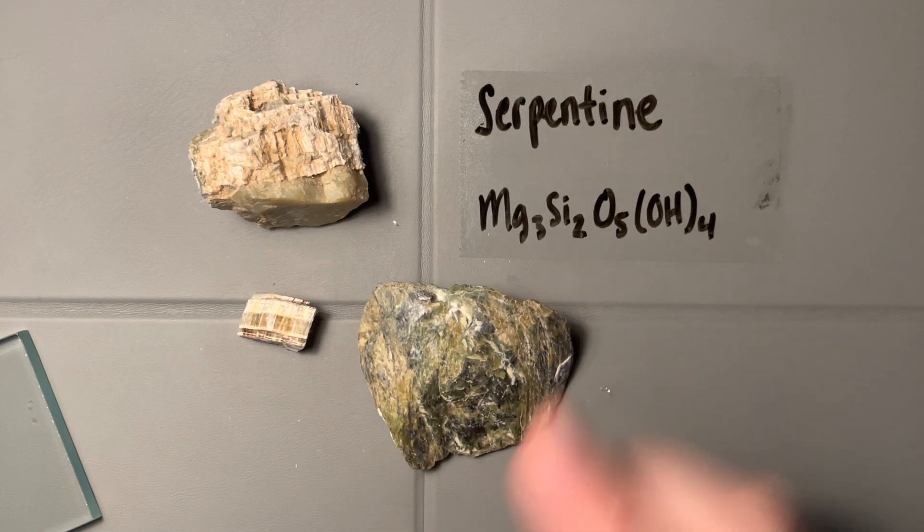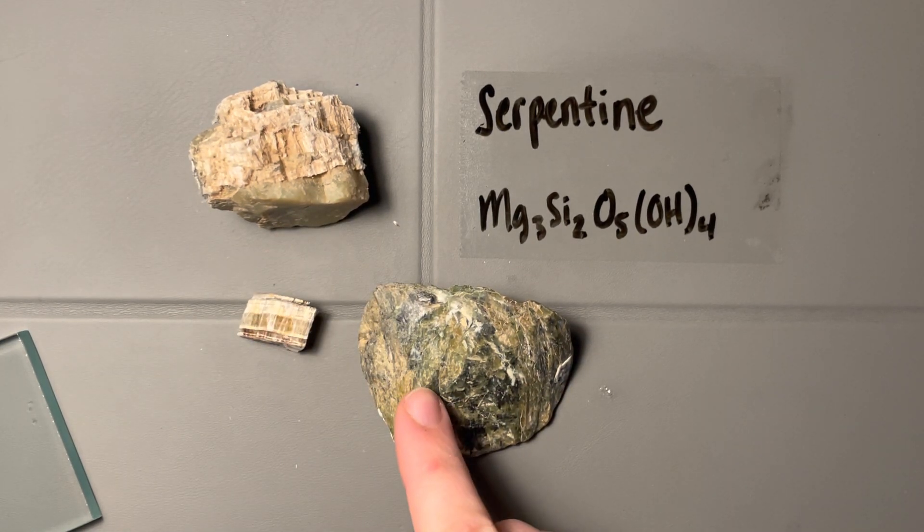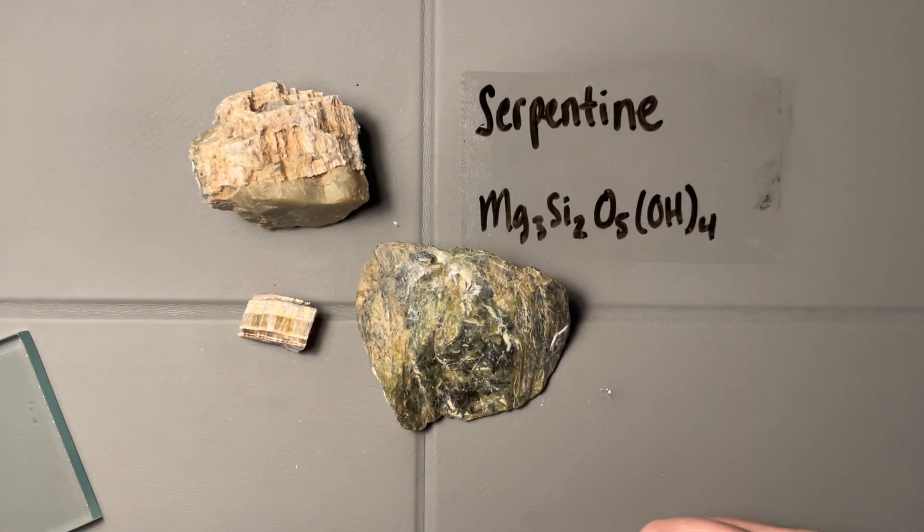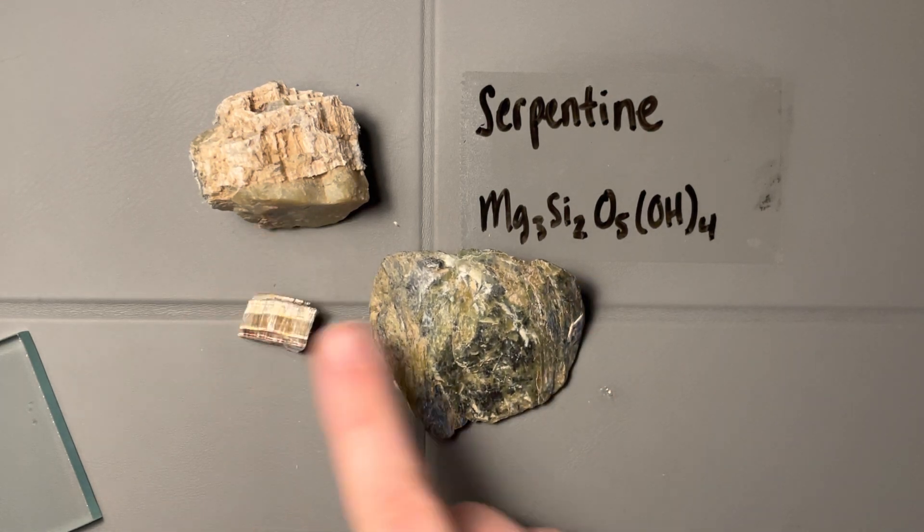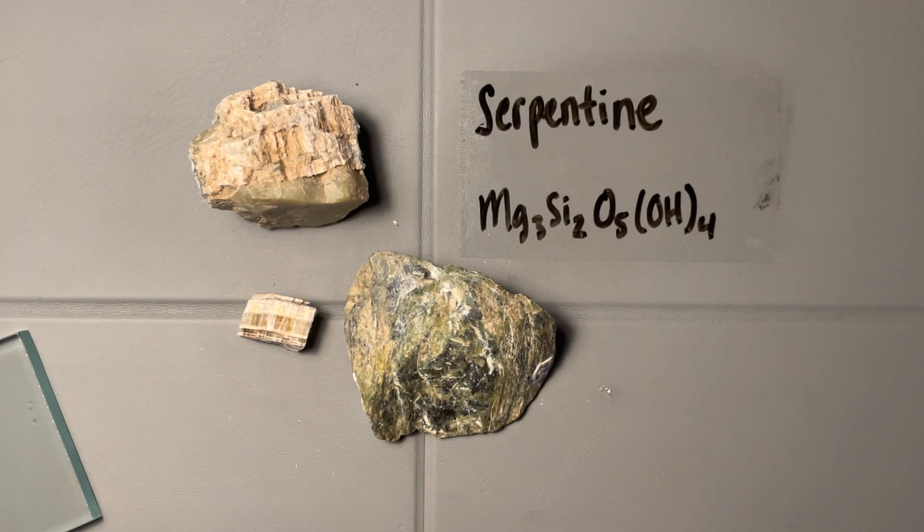And I think that's all I have. So really this fibrous texture, fibrous crystal habit, the color, variable hardness, the crystal system's monoclinic but that's not going to do you much. These won't react with acid, and that's basically serpentine—the quick and dirty breakdown.